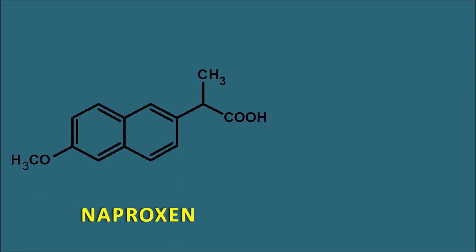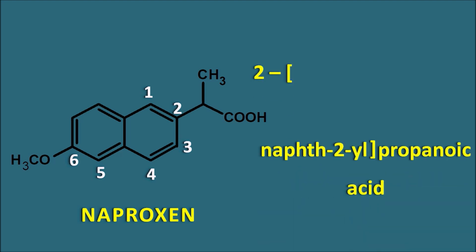The next drug is naproxen. Naproxen is attached with a naphthalene ring system. The numbering of the naphthalene ring starts at position 1 through 6. This naphthalene group is attached to propanoic acid at the second position, so we write 2-(naphth-2-yl)propanoic acid. The naphthalene ring has a methoxy group at the sixth position, so we add 6-methoxy. In this way we can simply write the name of naproxen.